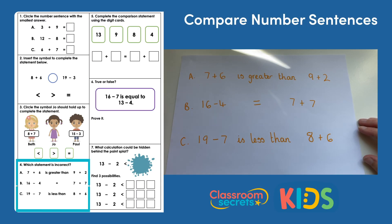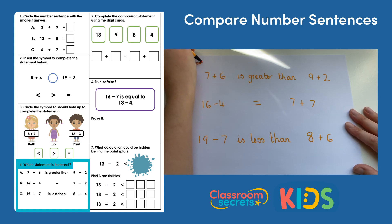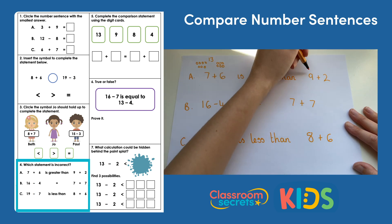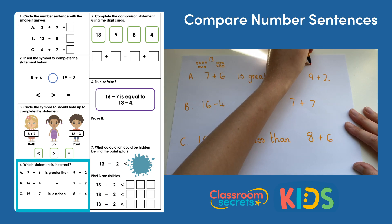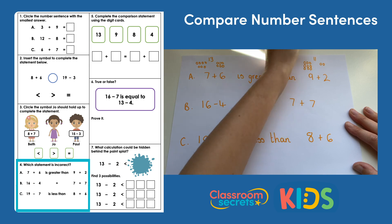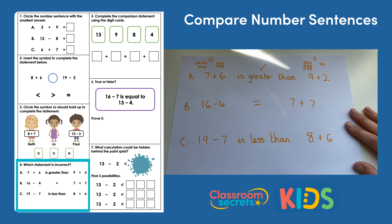Okay, which statement is incorrect? We need to solve the calculations to find out which one is incorrect. So we've got our seven dots and six more. And we're counting on from seven. Eight, nine, ten, eleven, twelve, thirteen is greater than nine plus two. So nine dots and two more. Nine, ten, eleven. Thirteen is greater than eleven. That one is correct. Remember we're looking for the one that is incorrect.